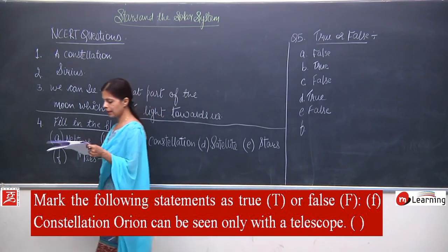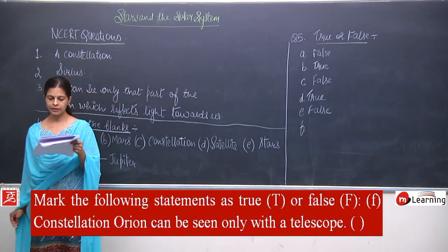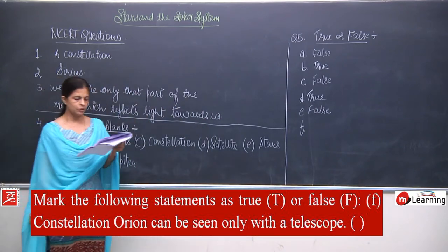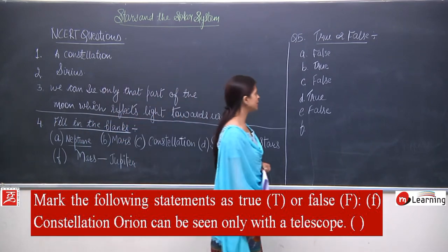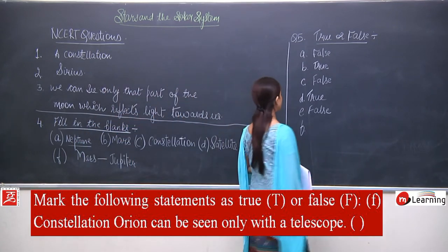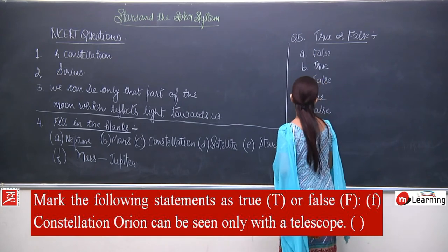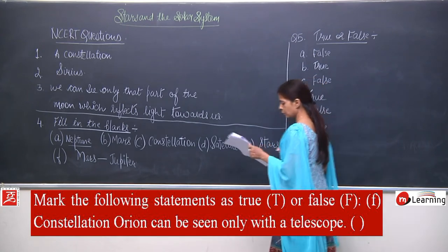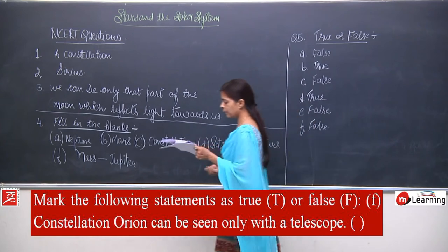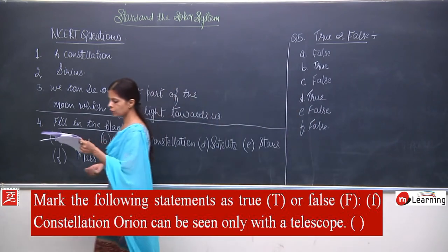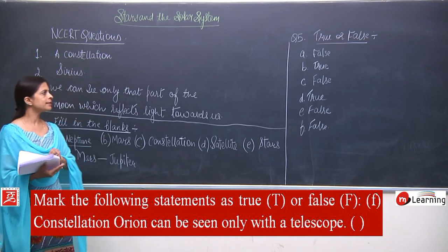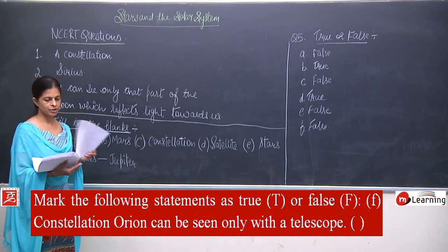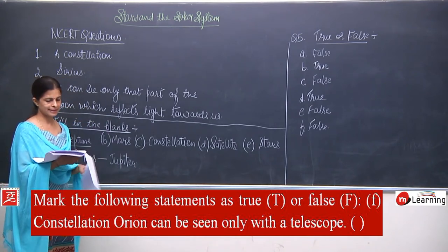F: constellation Orion can be seen only with a telescope — no, it is not like that. It can be seen in late evenings in winter time. So F is false because it can be seen with the naked eye also. This was all about the true and false section.